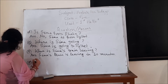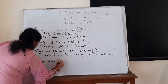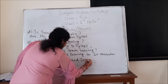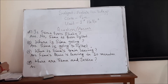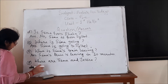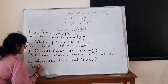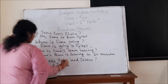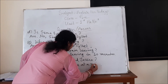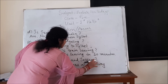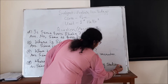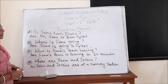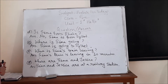Number G: Where are Shima and Jessica? The answer is that Shima and Jessica are at a railway station. The question and answer section is now complete.